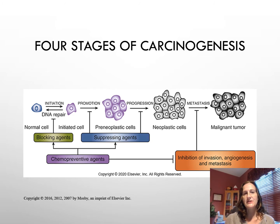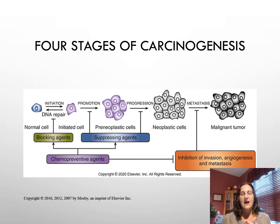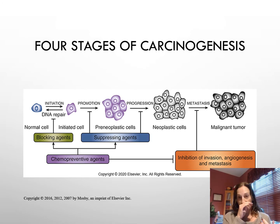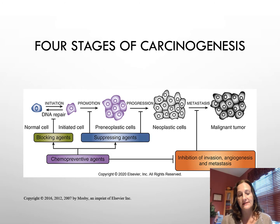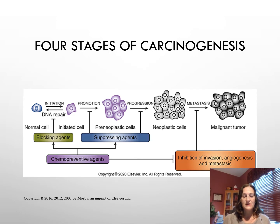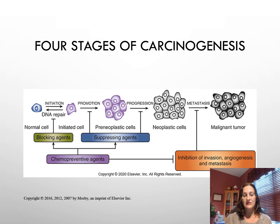The third stage is progression, where the abnormal cells are located outside their original location but not yet metastasized. Examples include environmental factors such as asbestos, benzene, benzoyl peroxide, and oxidative stress. The last stage is metastasis — metastatic cancer — where the cancer has spread to other parts of the body, which usually includes the liver, lymph nodes, and bones.